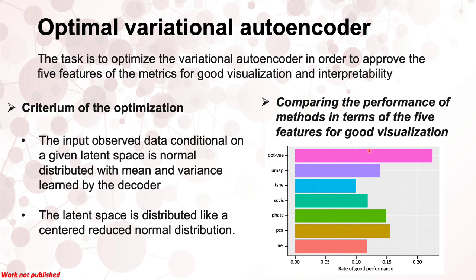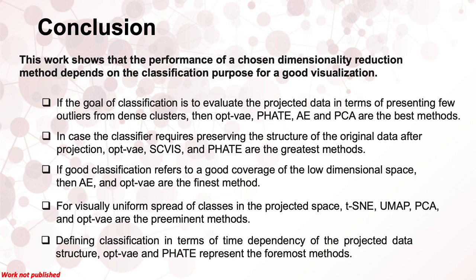None of the same methods highlighted above was optimal simultaneously for all five objectives. We therefore introduce a neural network approach called the variational autoencoder, which provides a probabilistic manner for describing observations in latent space. In conclusion, we propose an optimal variational autoencoder as a method that preserves meaningful properties of the original biological process after reduction, while providing better visualizations and interpretability. This work investigates the performance of chosen dimensionality reduction methods as a function of good classification, visualization, and interpretability. This work is funded by the NIH Division of Intramural Research.